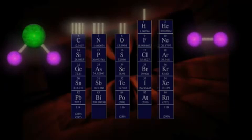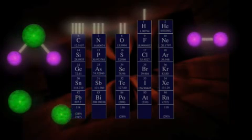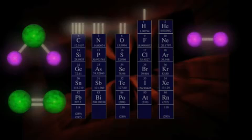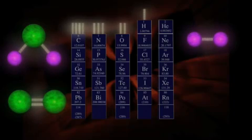Now there can be double bonds as well. Since oxygen wants to make two bonds, it can get together with another oxygen atom in a way that uses both available bondings. This oxygen molecule satisfies the bonding urge of both atoms, and the resulting double bond is very strong.